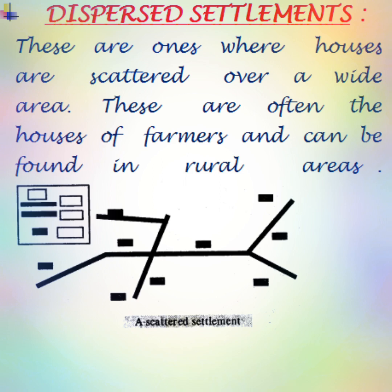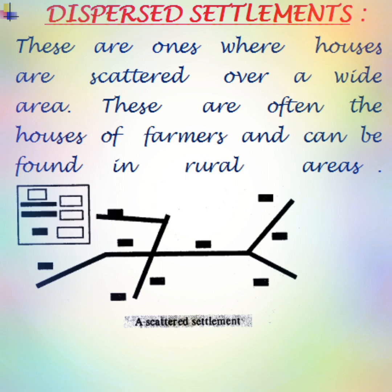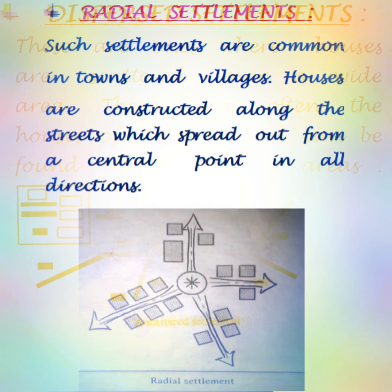The third one is dispersed settlements. These are ones where houses are scattered over wide areas. They are often the houses of farmers and can be found in rural areas.